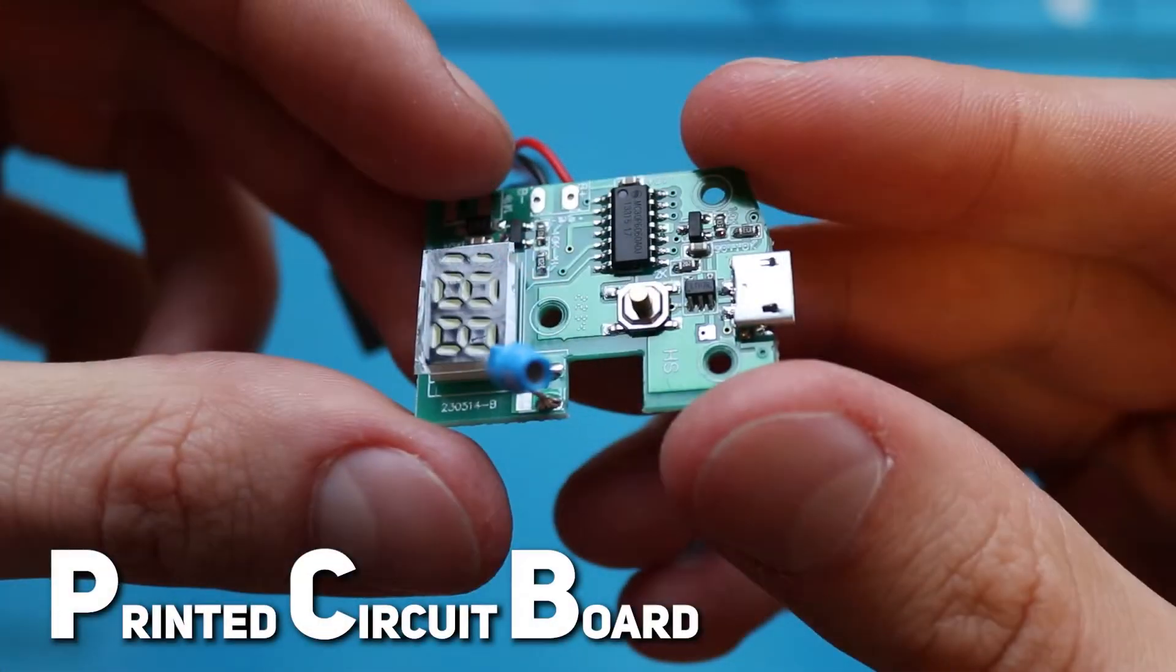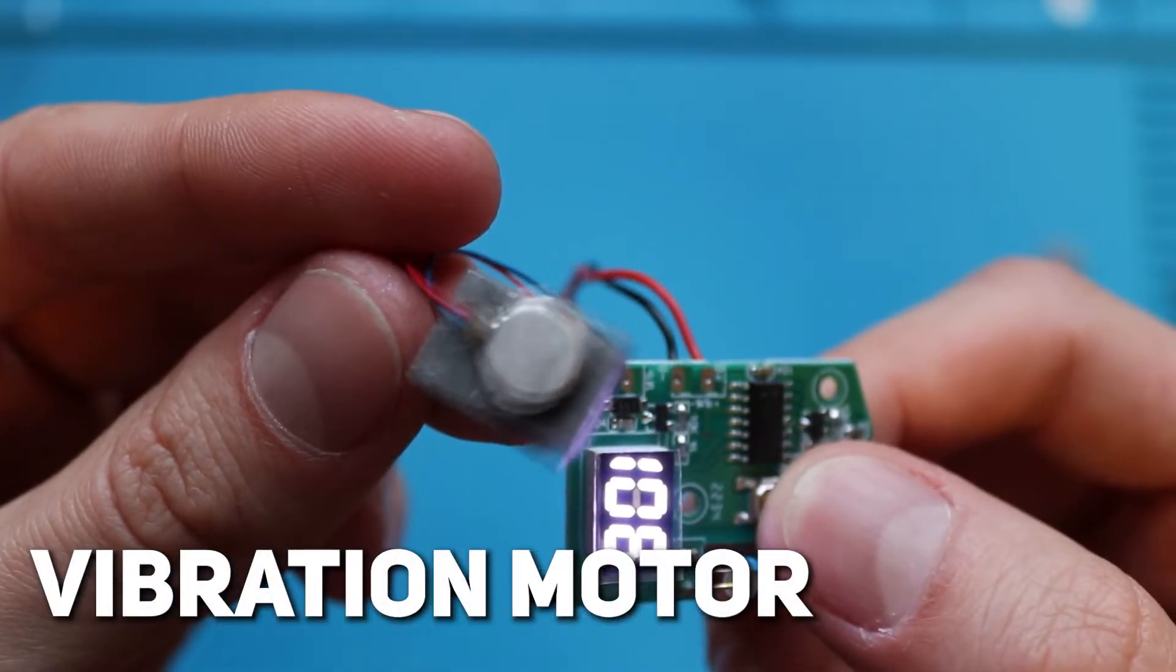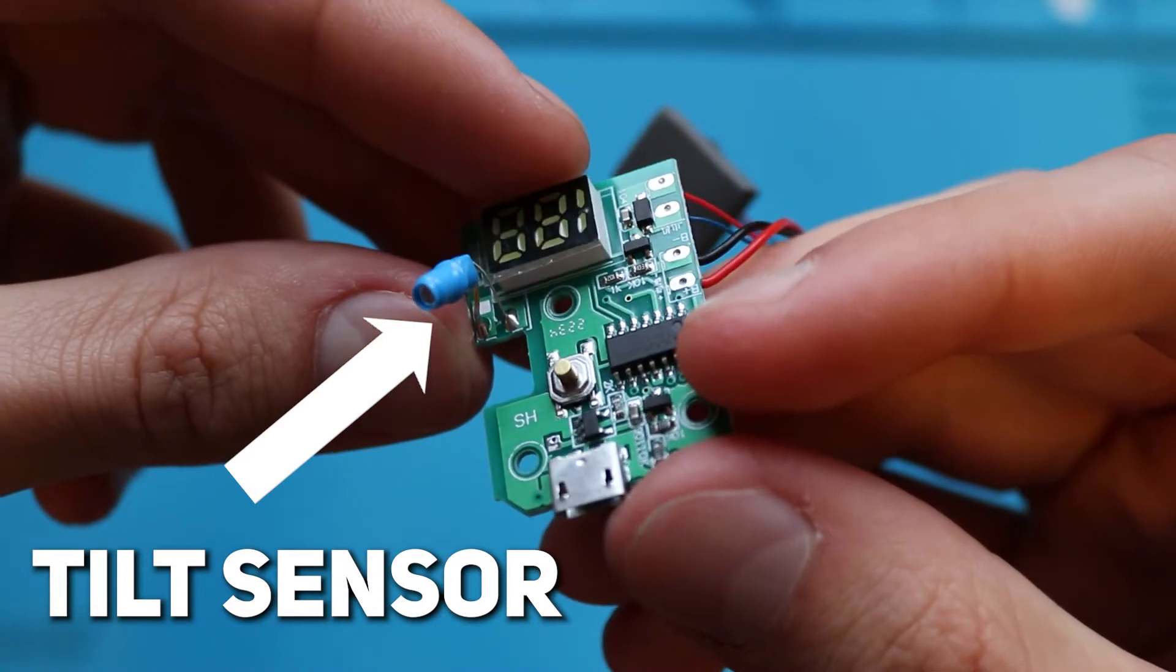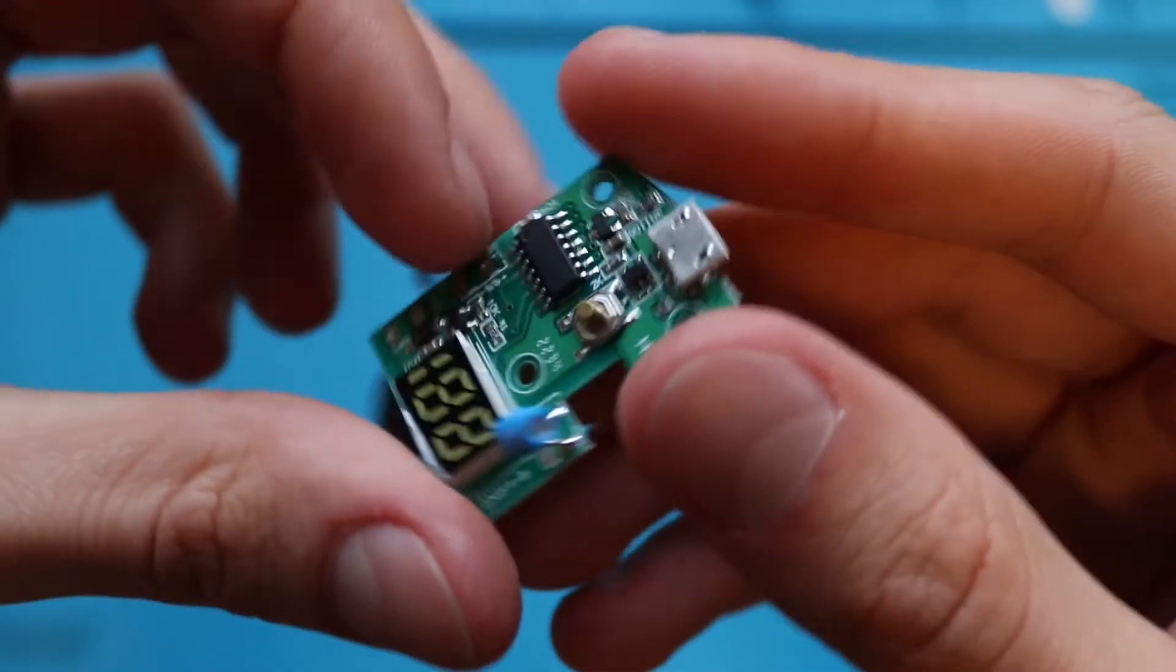Inside we can see a green PCB with a bunch of components soldered. This is a vibration motor. I assume that this blue component is a tilt sensor. Just to check my assumption, let's play with it a little bit.